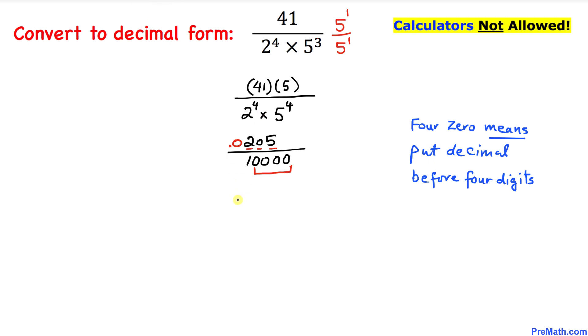Therefore, our answer is going to be simply 0.0205. So our answer in decimal form turns out to be 0.0205.